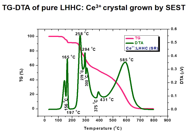Thermogravimetric and differential thermal analysis: The TG thermogram shows no loss of weight up to 150°C and 159°C for pure and CE3+ ion-doped crystals respectively. Endothermic peaks at 151°C and 156°C correspond to decomposition of pure LHHC and doped LHHC crystals respectively. Complete decomposition occurs above 650°C and 674°C for undoped and doped crystals. Hence, CE3+ ion-doped LHHC crystals can be retained up to 156°C with good thermal stability, suitable for applications.